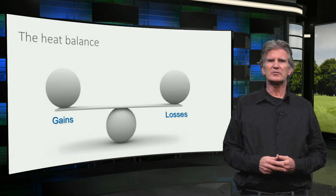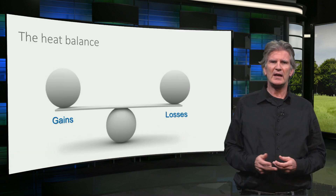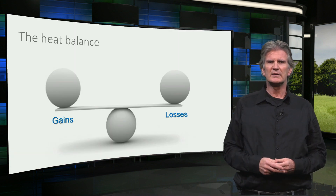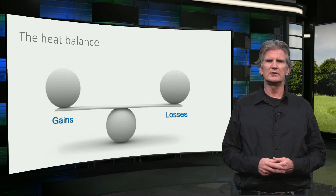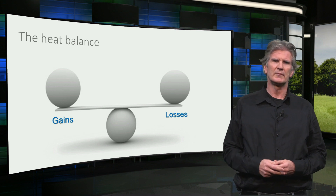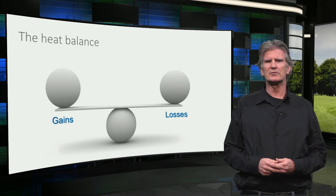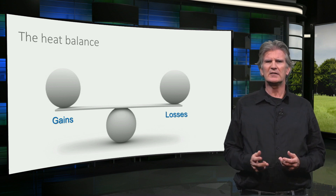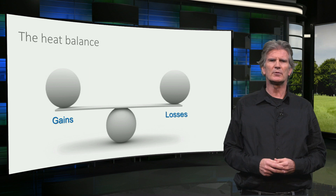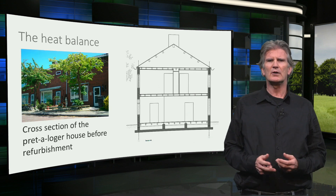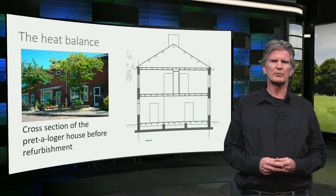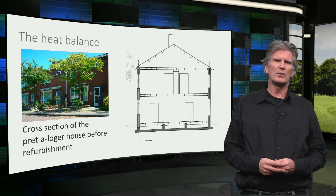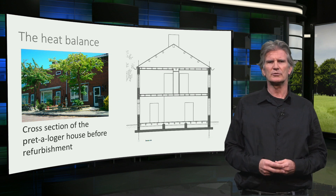The heat balance consists of heat gains on one side and heat losses on the other. To better understand what the heat balance looks like, let's have a look at the typical Dutch row house. This house was also used for the Pret-a-Logé refurbishment project, which we will show you as an example throughout this course.